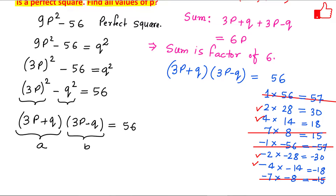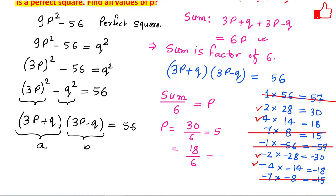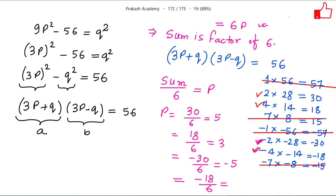For each valid possibility, p = sum ÷ 6. When sum = 30, p = 30/6 = 5. When sum = 18, p = 18/6 = 3. When sum = -30, p = -30/6 = -5. When sum = -18, p = -18/6 = -3. So the possible values of p are ±5 and ±3 — four possible values in total.